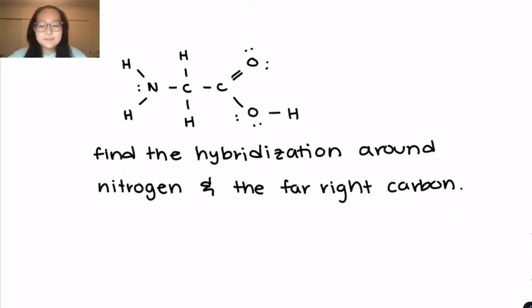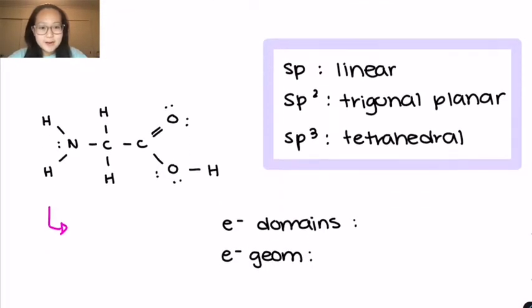Okay, so this molecule right here is glycine and what our task is to do is to find the hybridization around nitrogen and the far right carbon. So that's this nitrogen right here and this carbon right here.